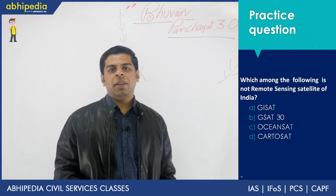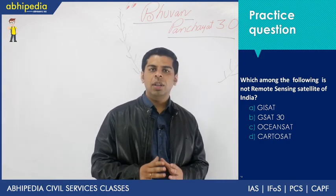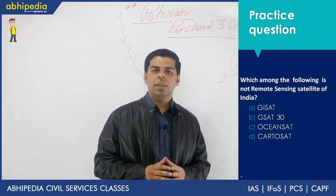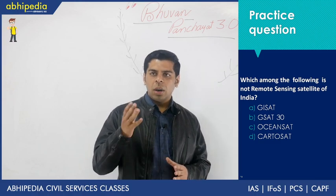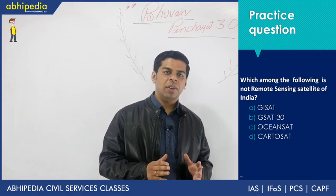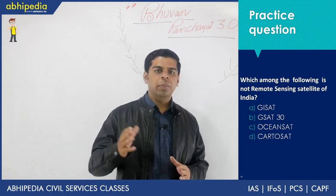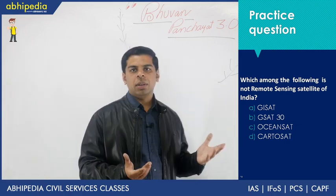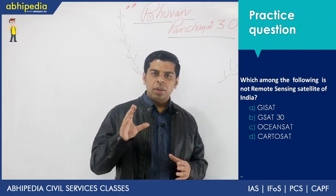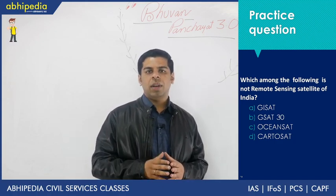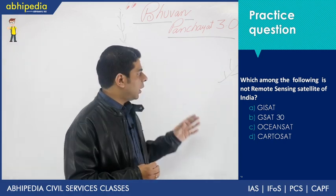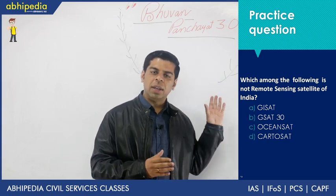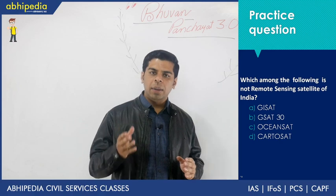Coming to the final part of the lecture — a practice question. I have framed a basic question on remote sensing technology: you have to choose which among the following satellites is NOT a remote sensing satellite. All are popular satellites. If you have been following current affairs of science and tech, specifically the space segment, this should be an easy one. I have mentioned four key satellites which have been in the news in the last one or two years. The first option, GISA, is a geo-information satellite and falls under earth observation satellites — it was to be launched in 2020.